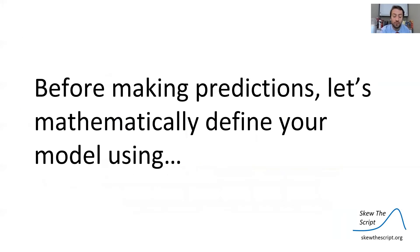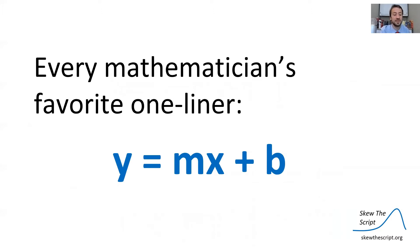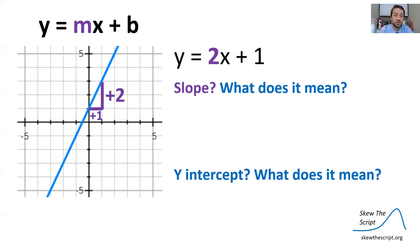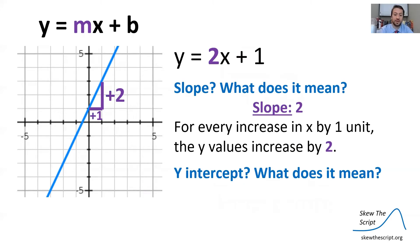We can now turn to our slope and y-intercept. Before making predictions, we have to mathematically define what model we are using. For that, we can turn to every mathematician's favorite one-liner: y equals mx plus b. We have y equals 2x plus 1 as a simple example. The slope is 2 — that means for every increase in x of 1, our y value increases by 2. So for every increase in x by 1 unit, the y-value increases by the slope of 2.